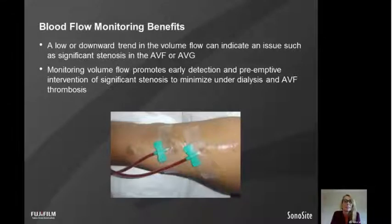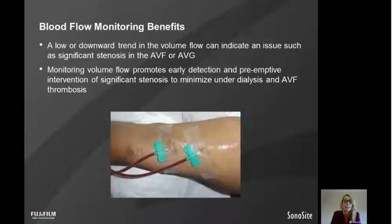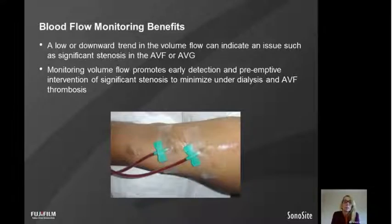Blood flow monitoring benefits: we can do a single measurement of blood flow volume, which gives us some idea of what the fistula or graft is running at. However, we also like to look at the trend, because a downward trend in volume flow can indicate a significant stenosis. It promotes early detection and pre-emptive intervention to minimize under-dialysis and AV fistula thrombosis. Regular volume flow monitoring — sometimes monthly, sometimes twice monthly, sometimes every three months — really helps us detect issues and intervene early.